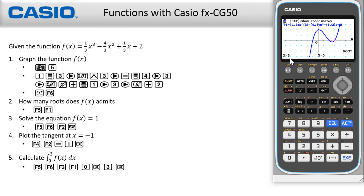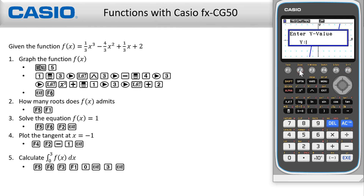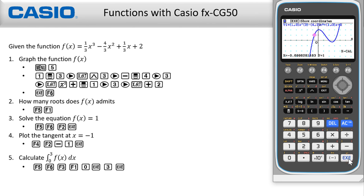Now to solve the equation f(x) equals one, press F5, then navigate to other options by pressing F6. Then choose x-cal with F2. Now you can input the y value equals to one, then select the Execute button. You can navigate through the solutions using the arrow keys.